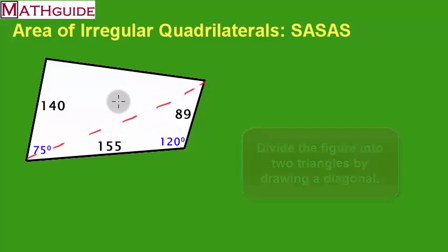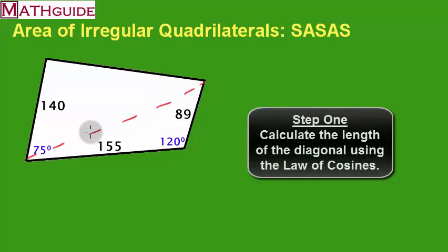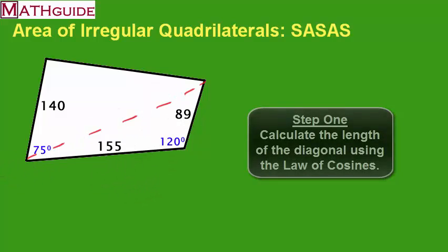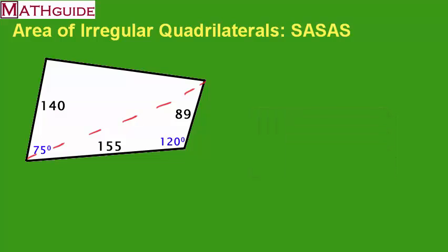If we divide the figure into two triangles with that diagonal, I would first like to calculate the length of this diagonal. To calculate the length of this diagonal we are going to use the law of cosines — we do have a video on that. I know I'm going to use the law of cosines because I've got two sides and an angle between those two sides, so it fits the format of the law of cosines.